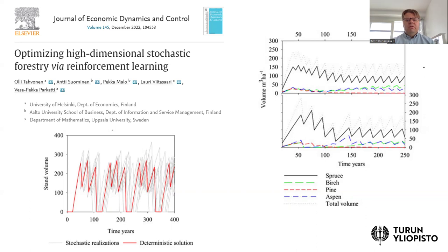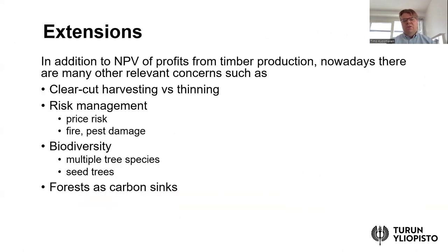There is also the possibility to think about multiple different species. The right-hand side of the figure shows how harvesting with multiple species can be done. Spruce is the biggest species in this example, but birch, pine, and aspen are also included. Notably, the volume of birch and aspen is increasing in the future in this example, presumably because of the impacts of climate change. With modern optimization and machine learning techniques, it is possible to take into account thinning strategies, risk management, biodiversity, and carbon sinks.